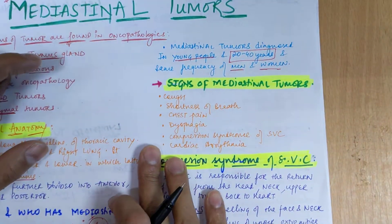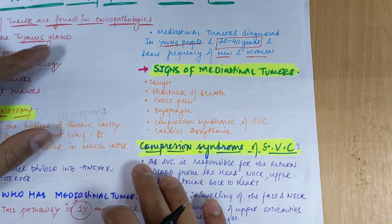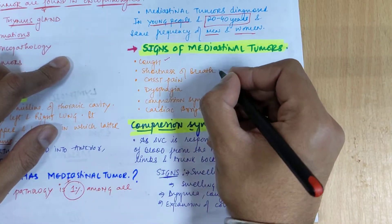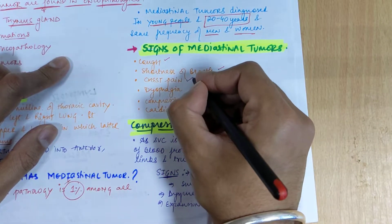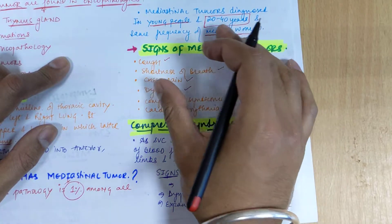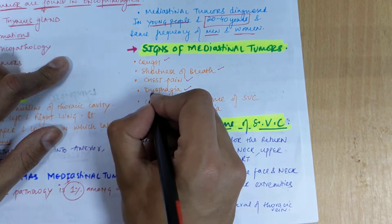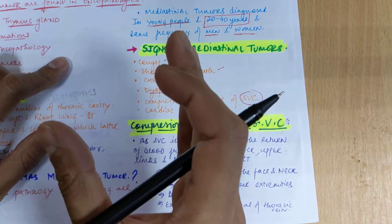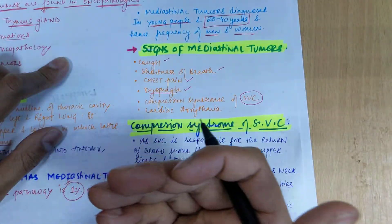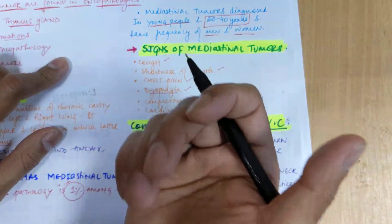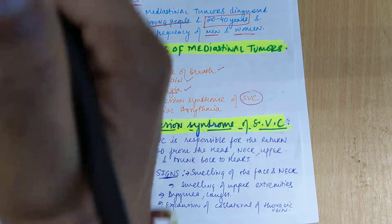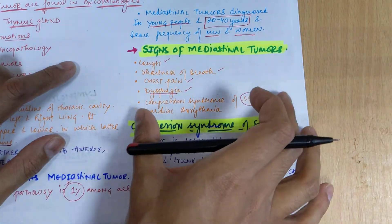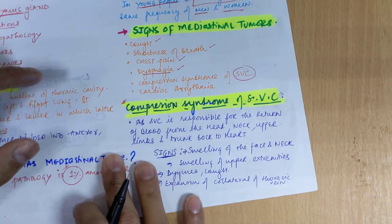The common signs seen in patients presenting with mediastinal tumors include cough, shortness of breath, dyspnea, chest pain, and dysphagia — where the patient is unable to swallow properly. There can also be compression syndrome of the SVC, that is the superior vena cava, which may be compressed by the tumor causing lack of blood supply to the upper extremities, brain, and face, leading to swelling in that region.